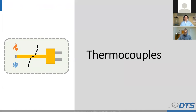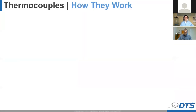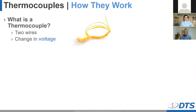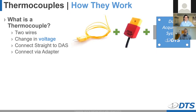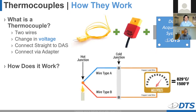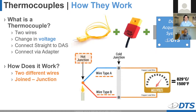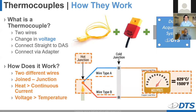Next, the reigning champion from our polls: thermocouples. How do these work? These measure the change in voltage as the temperature changes — another common, simple solution. You can either connect them directly to your DAS or use an adapter. Simply put, two wires of differing material are joined at one end — this is called a junction, or a hot junction, which is where the temperature itself is measured. As this is heated, it creates a continuous current, and the resulting voltage can be read as a temperature.